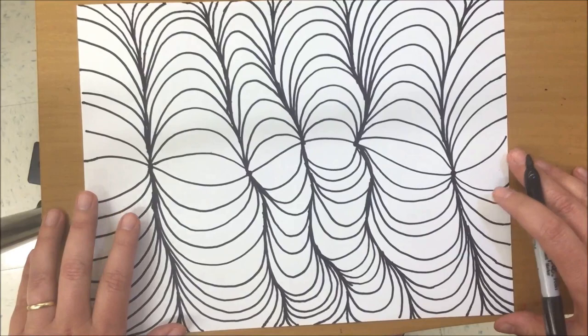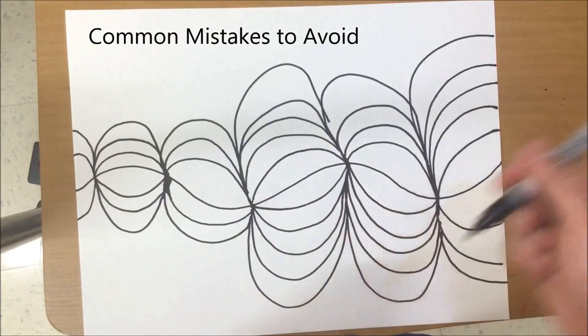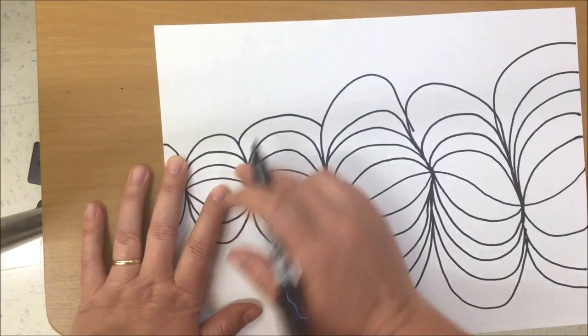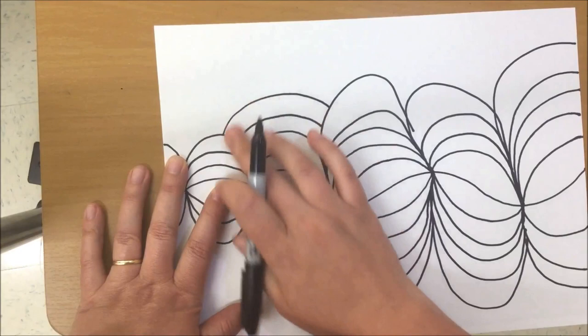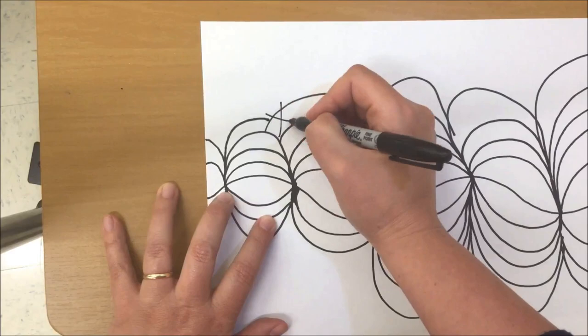One of the most common mistakes students will make is they'll start to rainbow. They'll forget to come back into this crease. So what they'll do is instead of coming to the crease right here, they'll make a rainbow where you see how that didn't come down to the crease. It's just kind of they're making rainbows. And that messes up your tunnel. If it doesn't come back to the crease, then the tunnel is not going to work. You don't want to do rainbows.